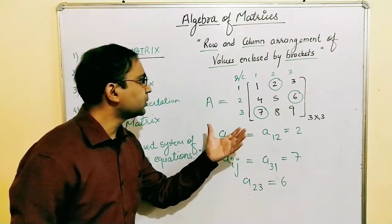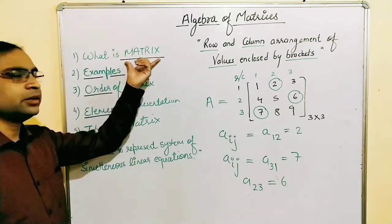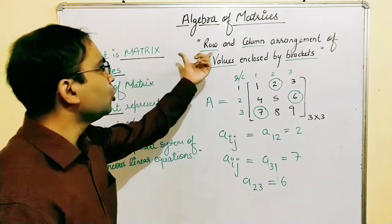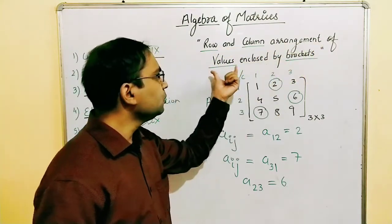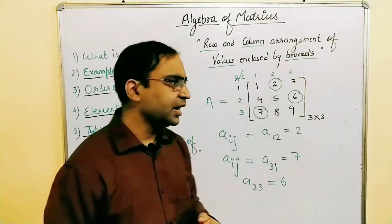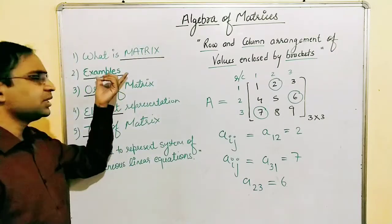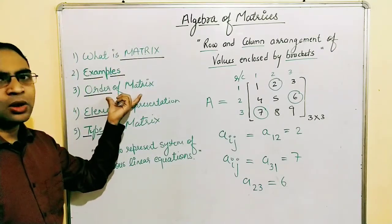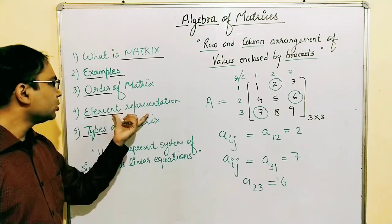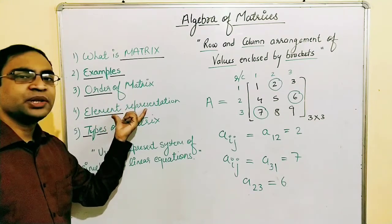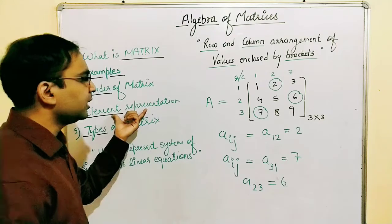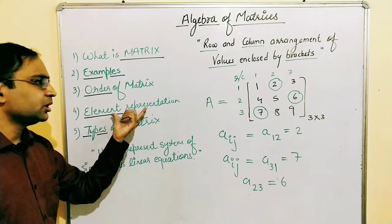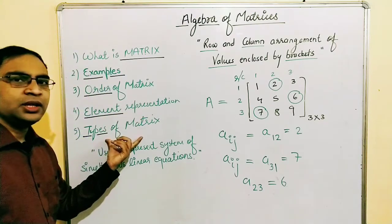Till now we have studied what we mean by a matrix. A matrix is the row and column arrangement of values enclosed by brackets. We had seen some examples, talked about the order of the matrix, and seen how we represent and access elements of the matrix.